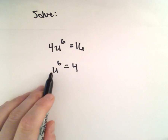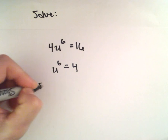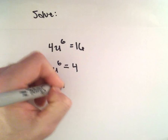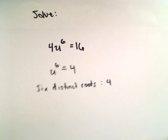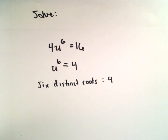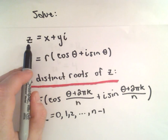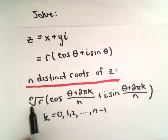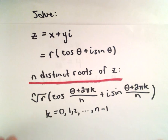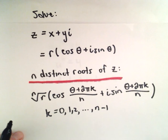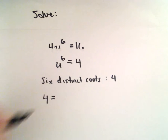Now we're going to take the 6th root of each side. So we're trying to find the 6 distinct roots of the number 4. To do that, I'm going to use the following result: if we have a complex number z written in trigonometric form, we can use a formula to find the n distinct roots of that complex number. The first thing I'm going to do is write the number 4 as a complex number in trigonometric form.